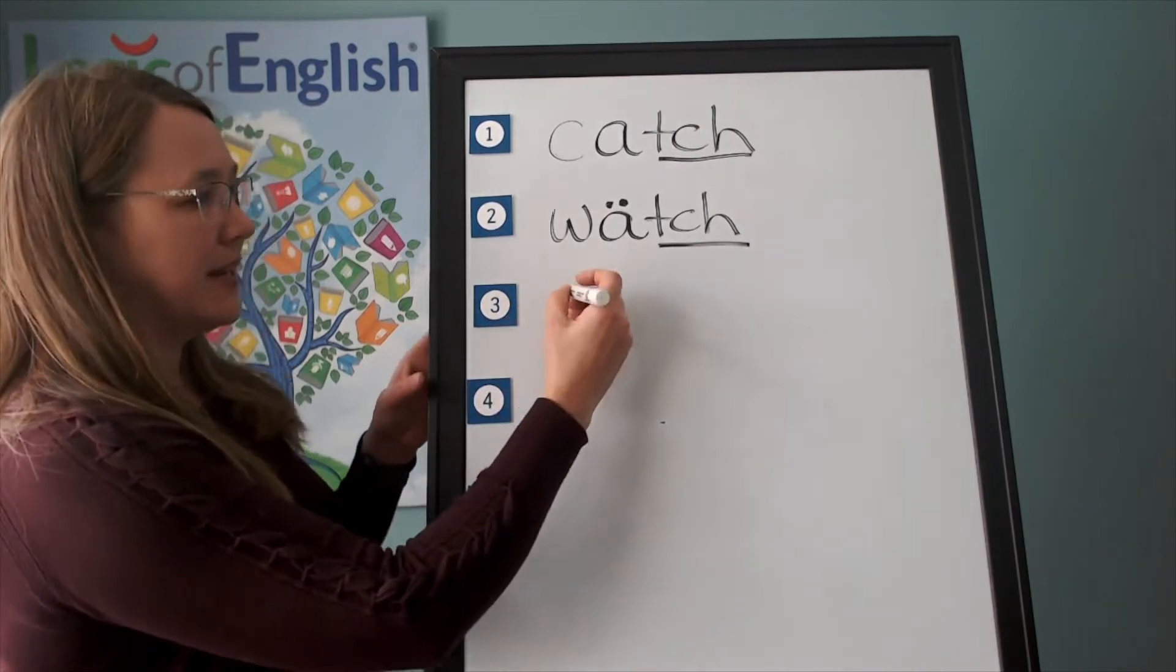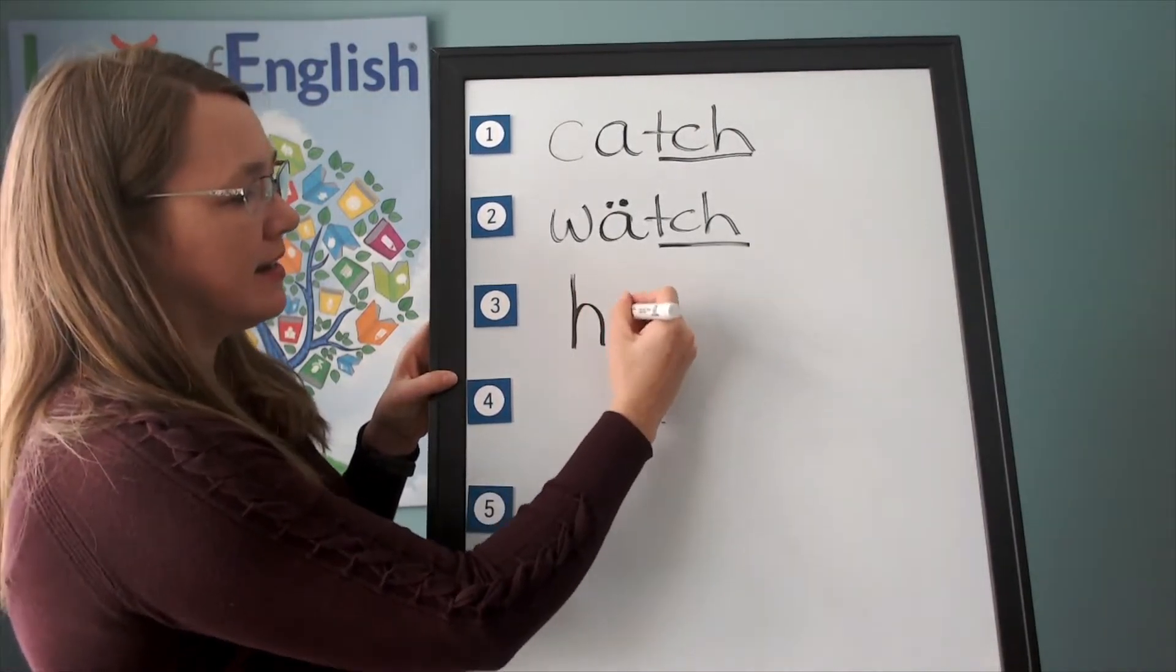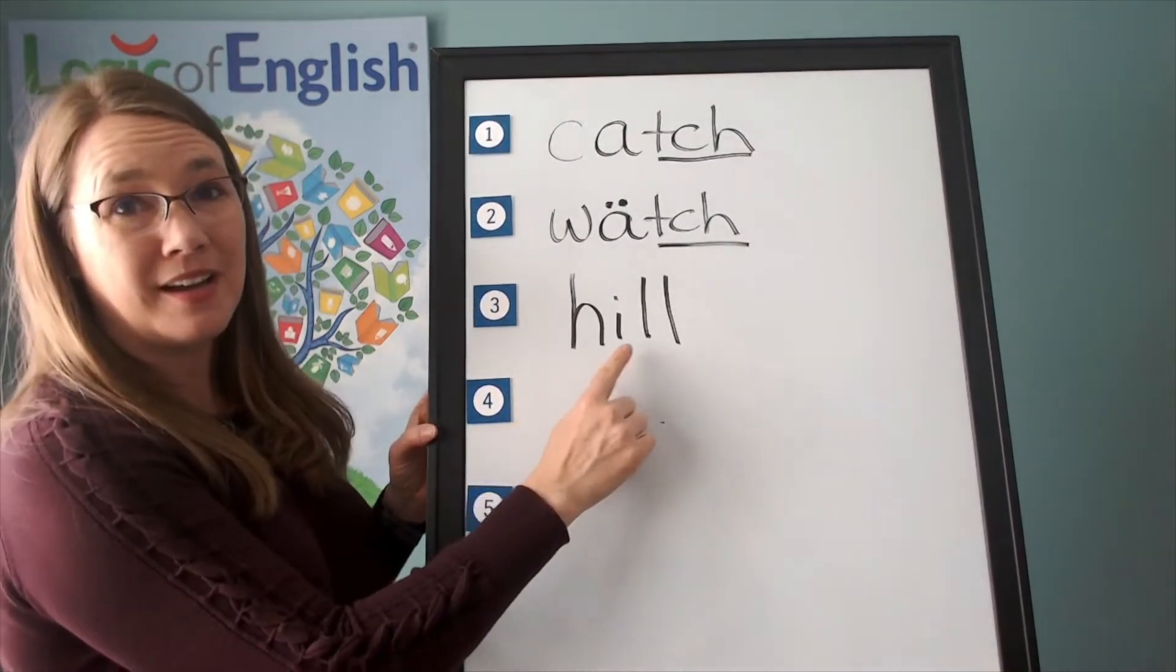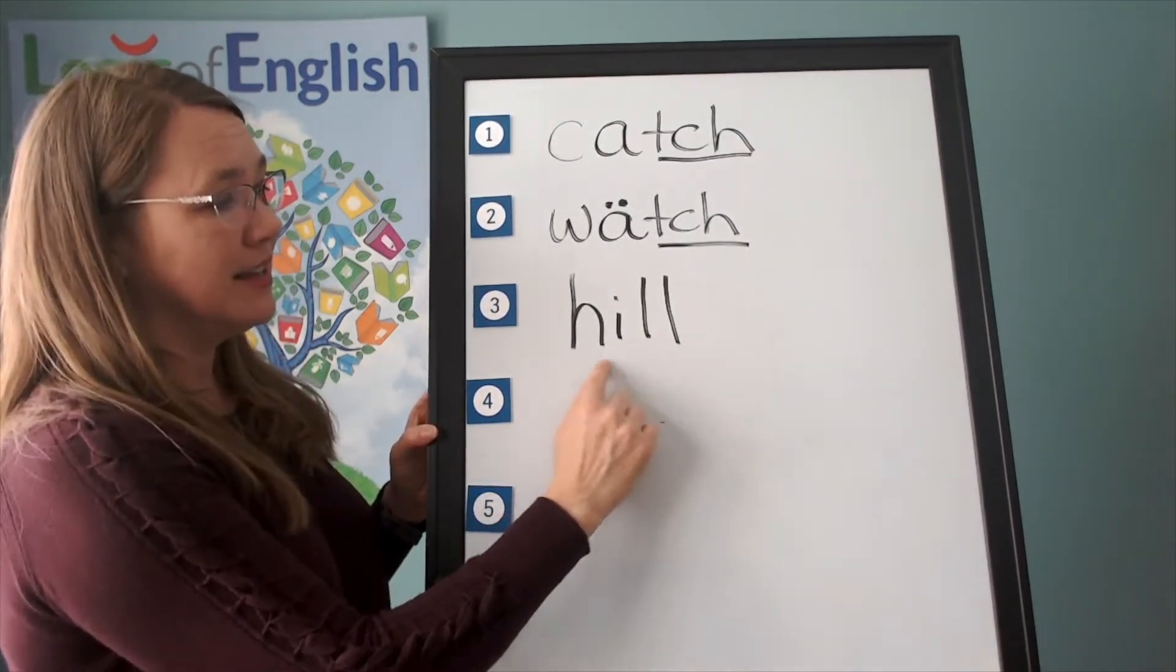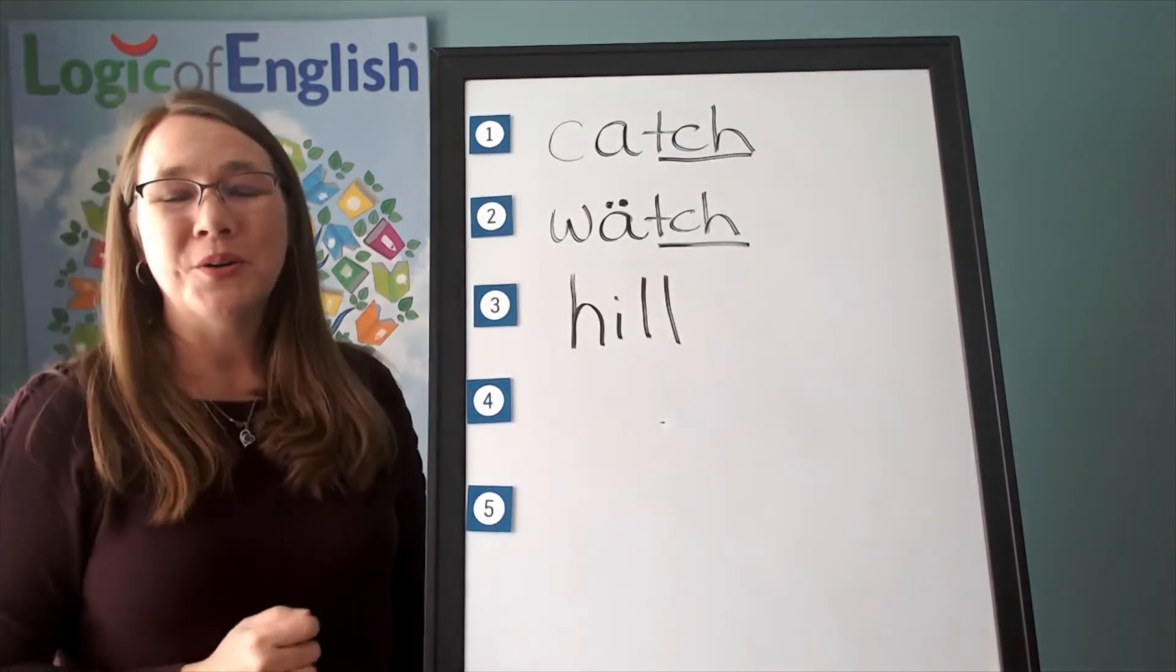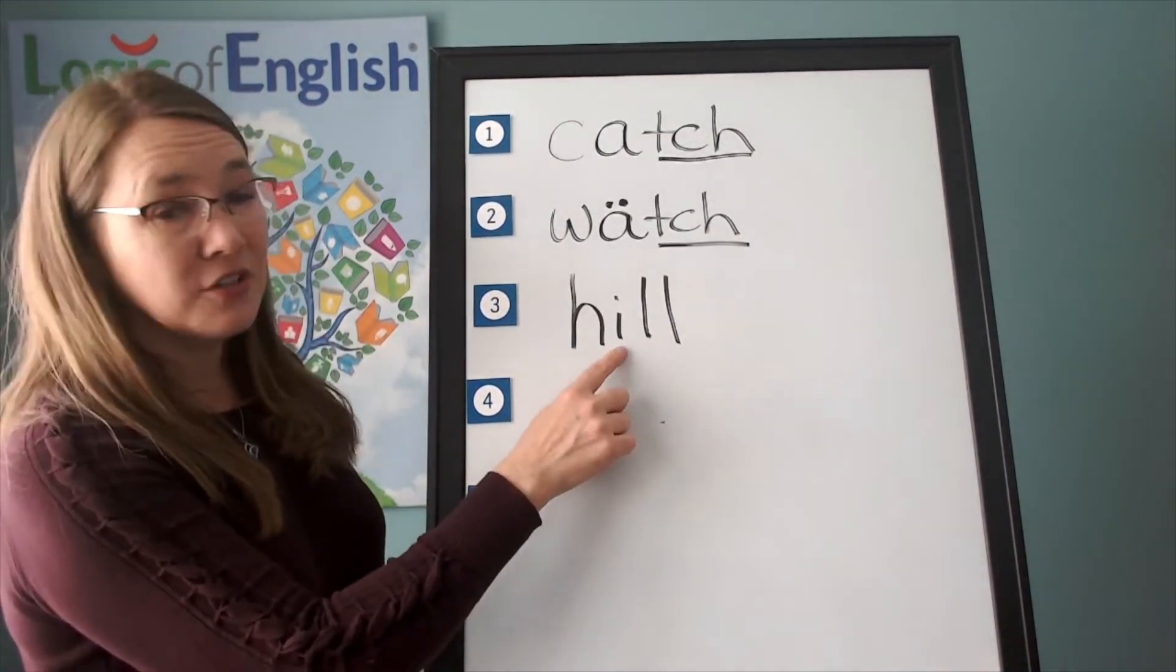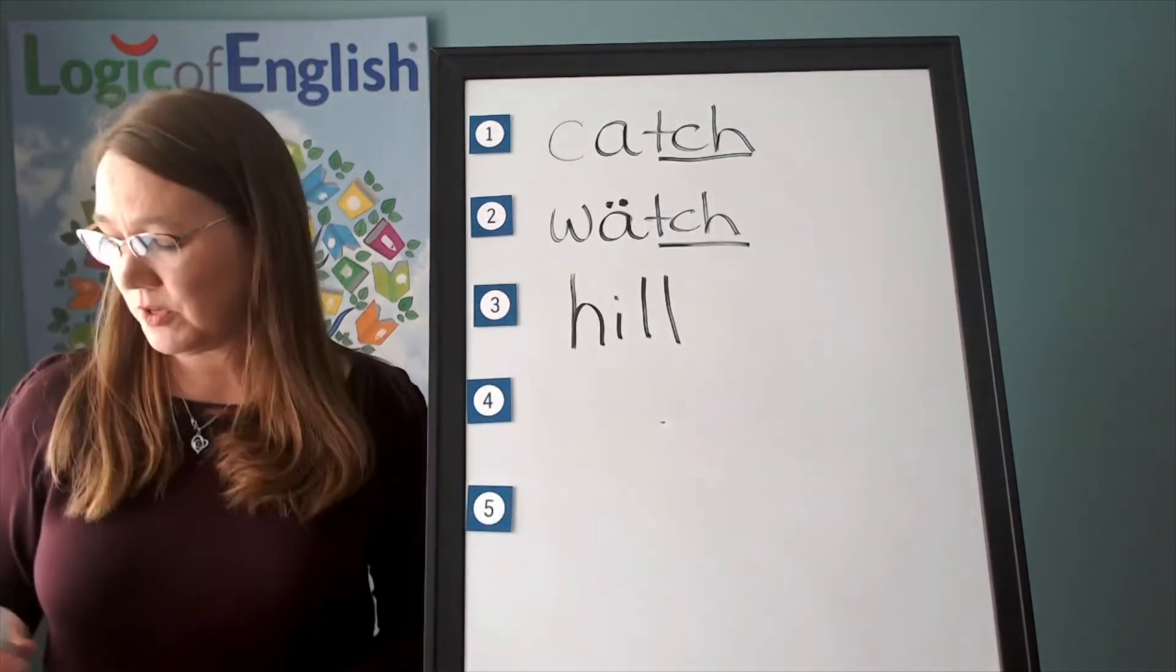Now help me to write it. H, i, l, l. Excellent. Let's sound it out. H, i, l, l. Hill. What's the rule? We often double F, L, or S after a single vowel at the end of the base word.